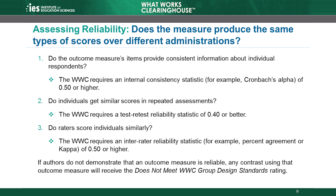For an outcome measure to have high internal consistency, the items in the measure must focus narrowly on a set of key concepts. For example, a measure that includes items assessing both reading and math skills is unlikely to have high internal consistency, because some students will score high on the math items but low on the reading items. The WWC requires an internal consistency statistic of 0.5 or higher.